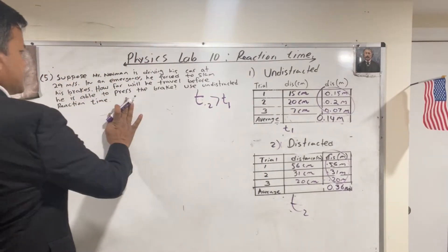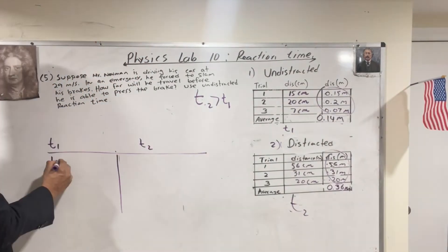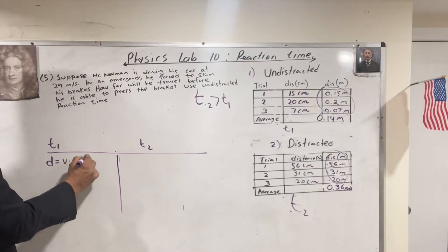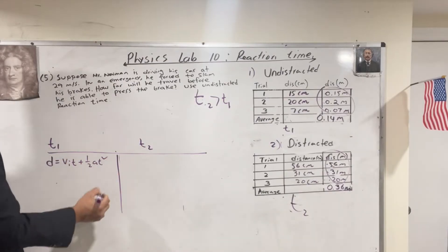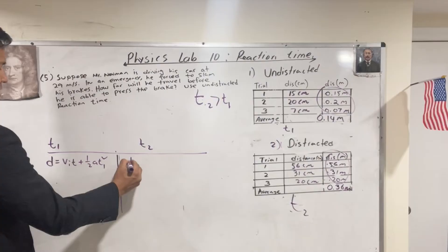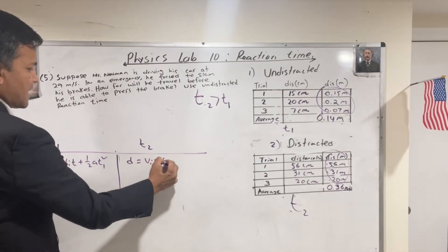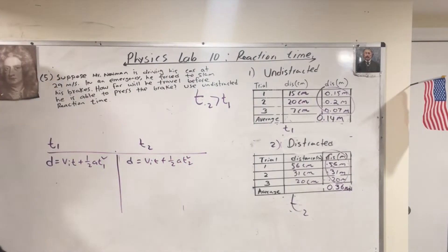Okay. Now, let's see how much bigger it is. D is equal to V₀T plus half AT squared and this is T1. D is equal to V₀T plus half AT squared and this is T2.